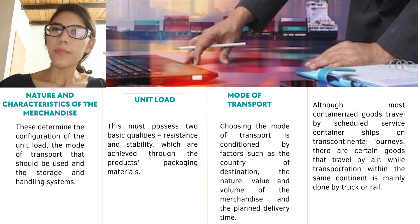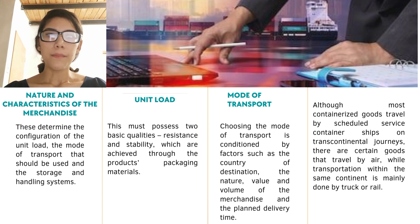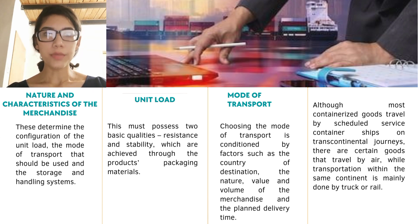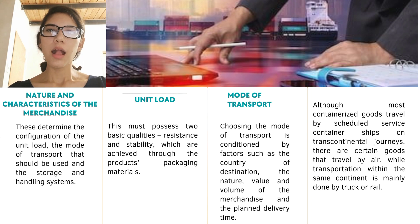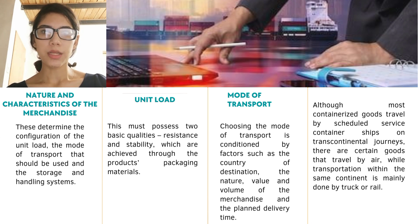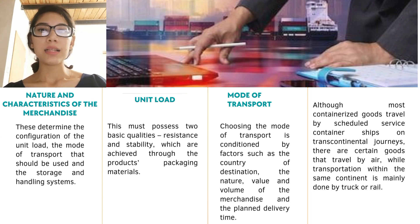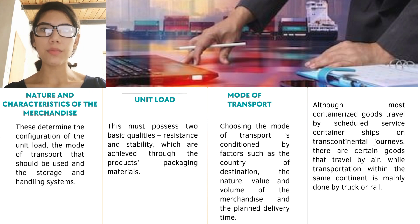Third, maritime: regulated by the Hague rules; the contract is formalized in the Bill of Lading. Air: regulated by the Montreal Convention; the contract is formalized in the Airway Bill (AWB). Most containerized goods travel by scheduled container ship service on transcontinental journeys. Certain goods travel by air — temperature-controlled products, valuable products, live animals, spare parts, etc. — while transportation within the same continent is mainly done by truck or rail.